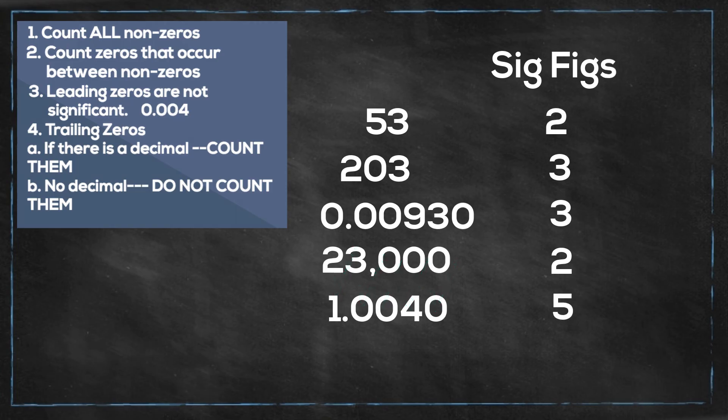And the last example. This one looks pretty straightforward. It can be a little tricky. You have 90, so you have a non-zero, the nine. And you have a trailing zero. But notice there is no decimal. So you will only count the nine. So you only have one.